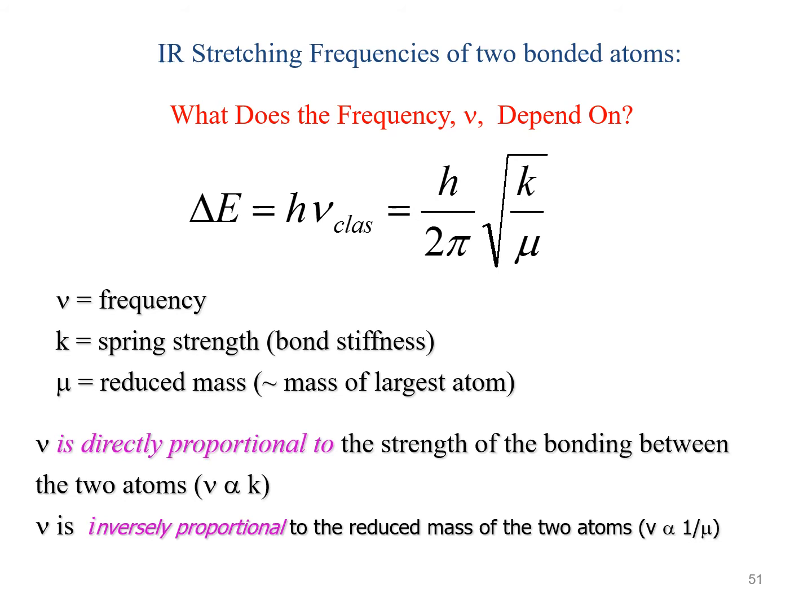The delta of energy is equal to the Planck constant times the frequency. The frequency is represented with a V, and is equal to the Planck constant over 2π times the square root of the spring strength over the reduced mass. Spring strength represents bond stiffness, while the reduced mass is, on average, the mass of the largest atom. As you can see, frequency is directly proportional to the strength of bonding between the two atoms and inversely proportional to the reduced mass of the two atoms.